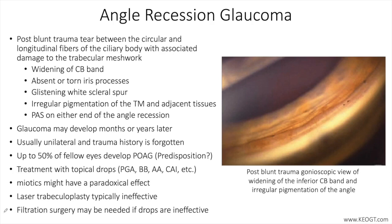Laser trabeculoplasty is believed to be less effective but is also low risk if attempted. Minimally invasive angle procedures, such as trabecular meshwork bypass stents and goniotomy, have not been well studied in angle recession glaucoma. Filtration surgery may be less successful if done shortly after acute trauma due to increased inflammation and higher tendency for hyphema. Trabeculectomy and glaucoma drainage devices are however highly effective in later stages of angle recession glaucoma and represent the primary method of lowering IOP in these cases.